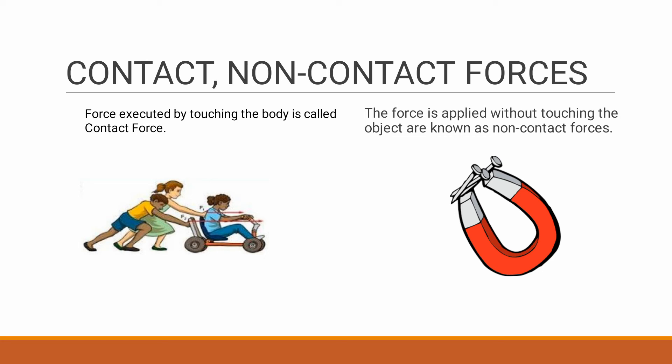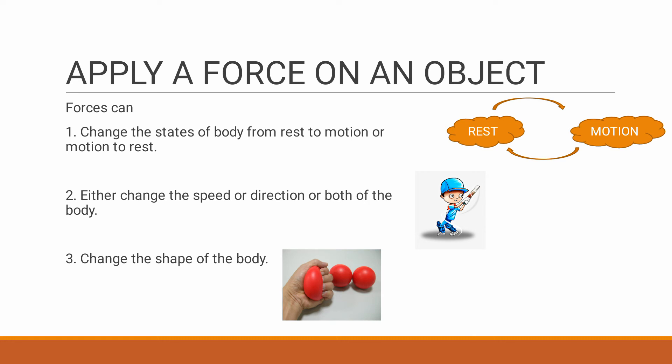Now we are going to see when we apply a force what will happen to the object. First thing is when we apply force it changes its state from rest to motion or from motion to rest. Example is kicking a ball, that is it changes from rest to motion, and stopping a bicycle, this is an example for motion to rest. Second one, when we apply force it will change the speed or direction or maybe both of the object.